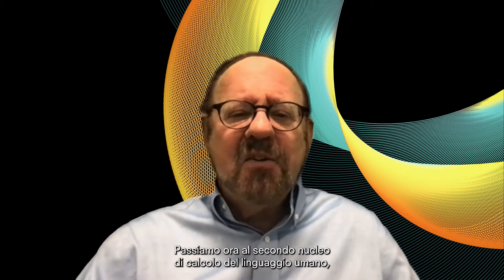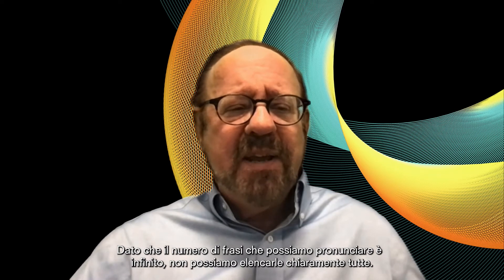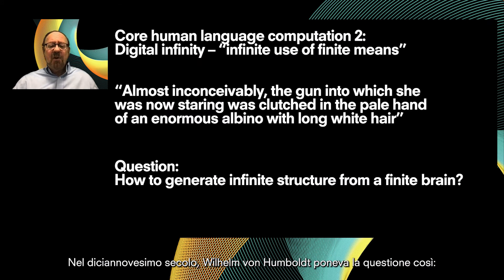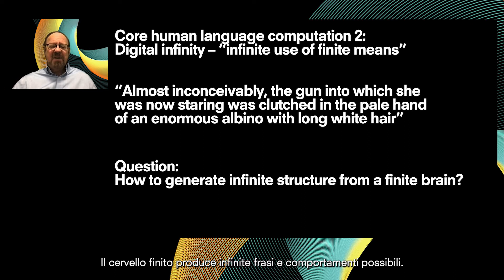Let's turn now to the second core computation of human language: what can be called digital infinity. 'Digital' because there are three- and four-word sentences but no three-and-a-half-word sentences. 'Infinity' because we can construct infinitely many thoughts in our minds and convey them to others. Since the number of sentences we can speak is infinite but the brain is finite, William von Humboldt put the matter this way: language makes infinite use of finite means — a finite brain producing infinite possible behaviors and sentences.